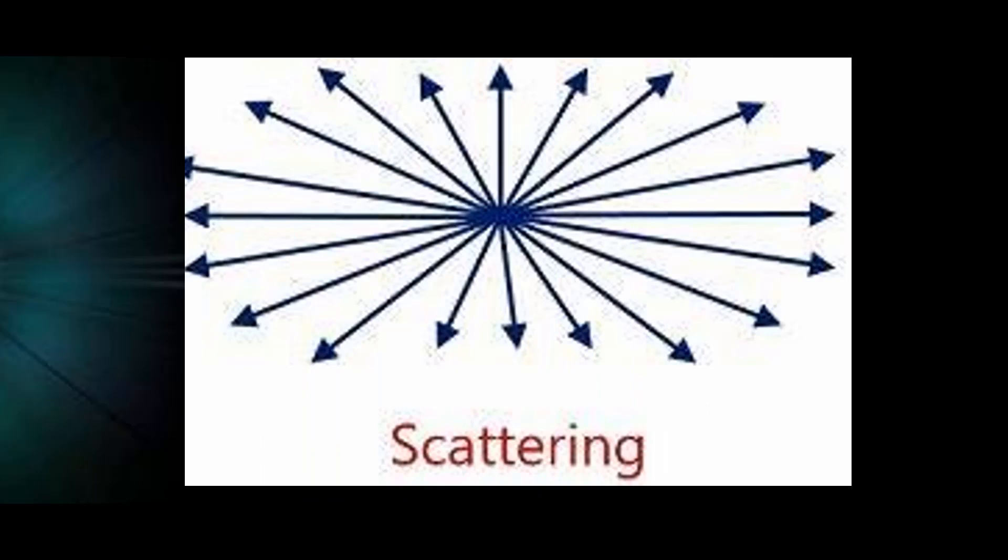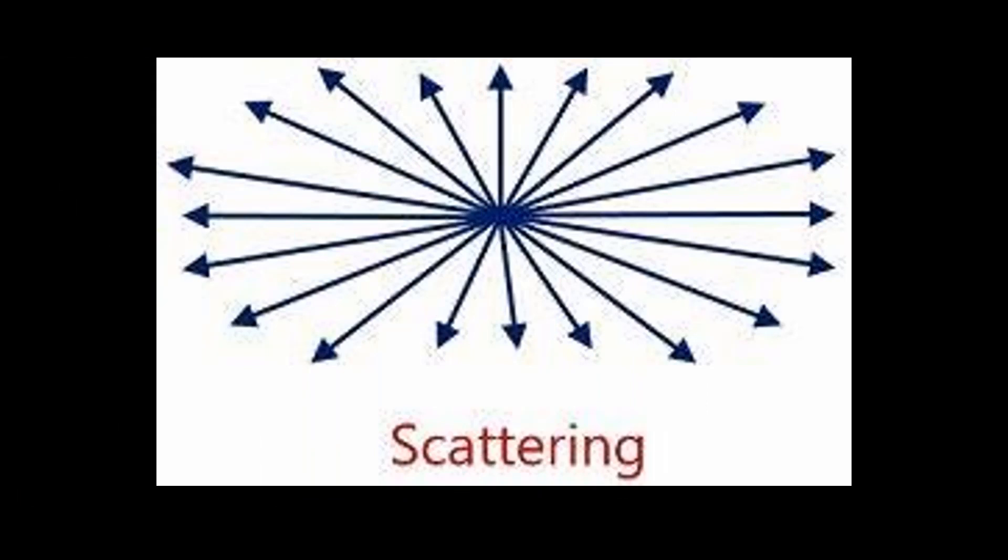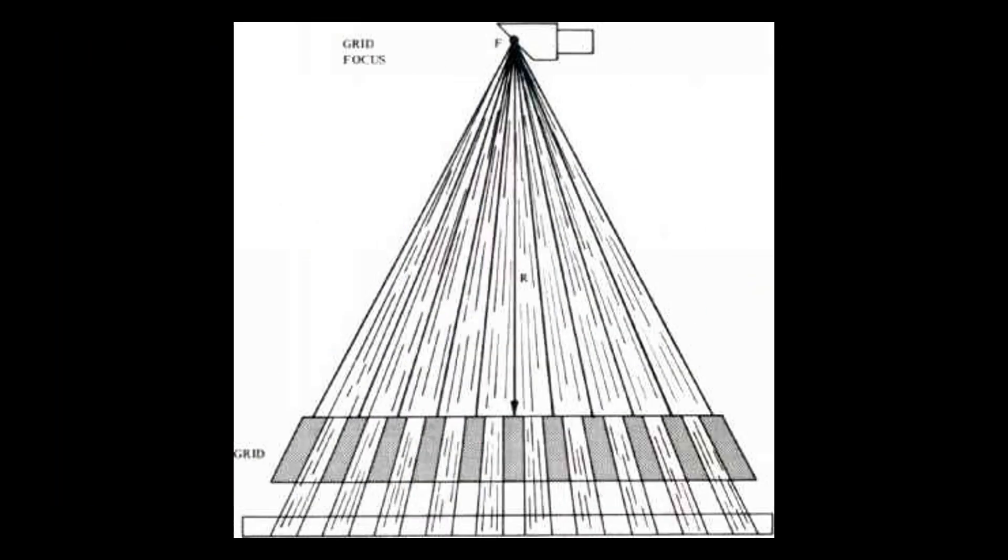Well, in the same way, x-rays are focused in the middle, and they diverge out at different angles the further you get from the centering point. So now you can understand the design of grids. The lead strips on the grid are aligned straight ahead in the center. And as the strips get further out, they begin to angle along the direction that the photons are traveling in.